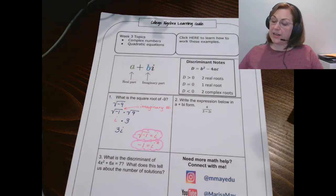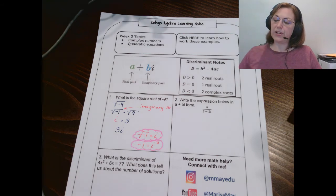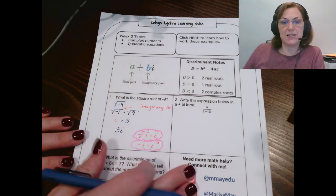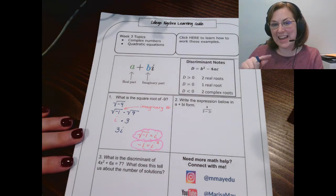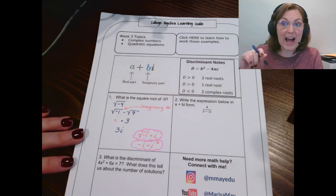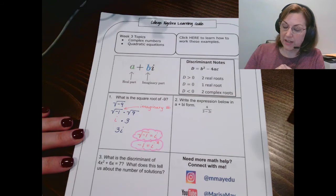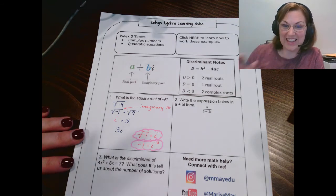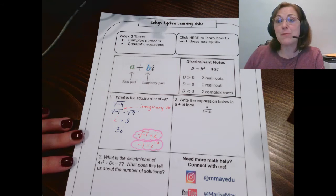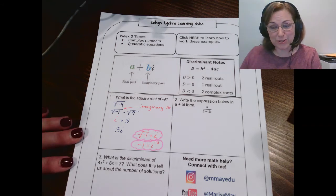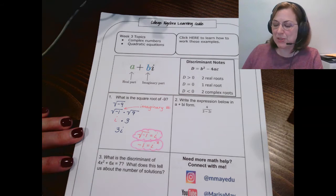Now, here in number 2, I am looking to rewrite this expression. And here's what these directions are saying. Hey, get the i out of the denominator. That's in plain speak. That's what these directions are saying. Take the i out of the denominator. But you've got to do it by the right rules. By following the rules. So, let's take a look at it.